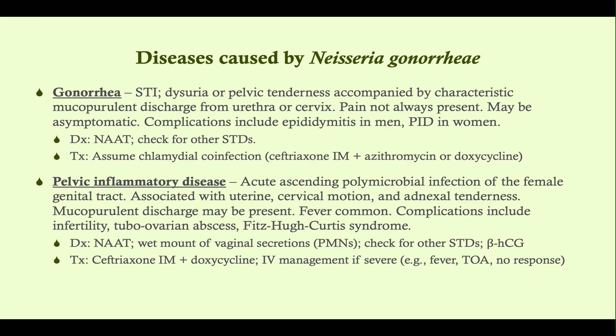For treatment, always treat both gonorrhea and chlamydia simultaneously, because co-infection is very common. Give ceftriaxone once intramuscularly, plus azithromycin orally — or you can substitute doxycycline for azithromycin. So the regimen is ceftriaxone plus azithromycin, or ceftriaxone plus doxycycline. Ceftriaxone is the agent active against Neisseria, and you'll see it come up again and again for gonorrhea infections.